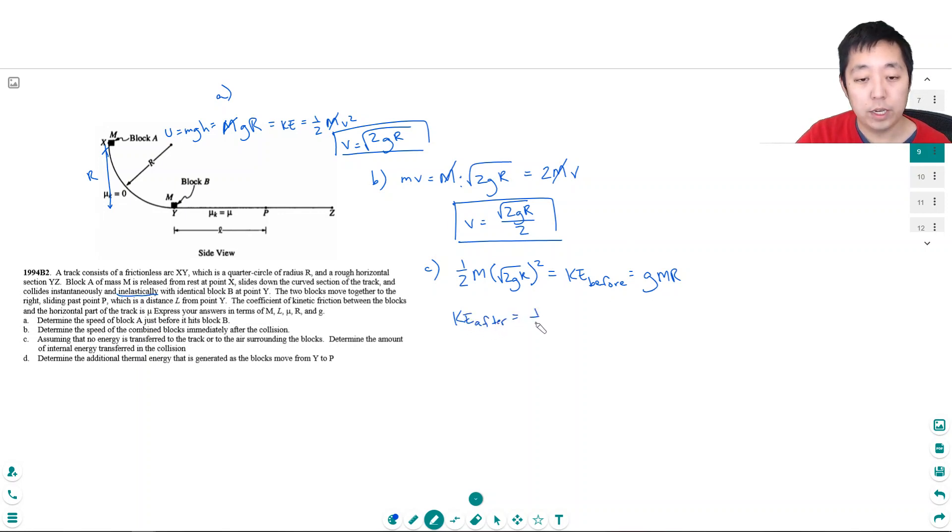Is equal to one half, now it's two m because they're moving together, and they're moving at a velocity square root of two gr over two squared. So this is one half mv squared again, so this is just m, the one half and the two cancel. This is 2gr over four. I just square the top which gets rid of the square root and square the bottom, so this is mgr or gmr over two right because that cancels.